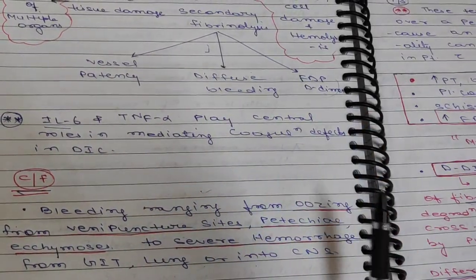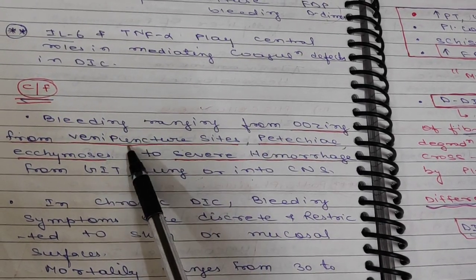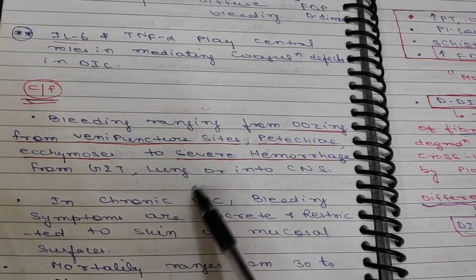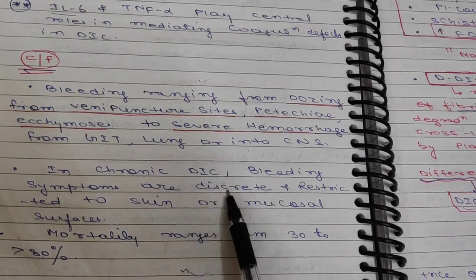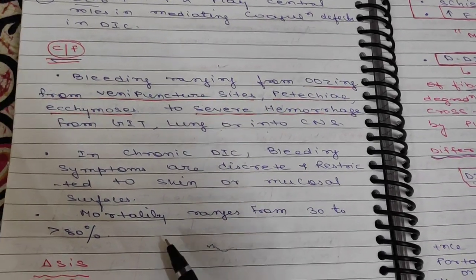What are the clinical features? Bleeding ranging from oozing from venipuncture sites or petechiae and ecchymosis to severe hemorrhagic forms such as GI bleeding, lung bleeding, or CNS bleeding. In chronic DIC, bleeding symptoms are discrete and restricted to skin or mucosal surfaces. Mortality ranges from 30 to 80 percent.